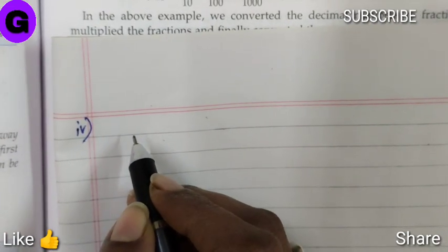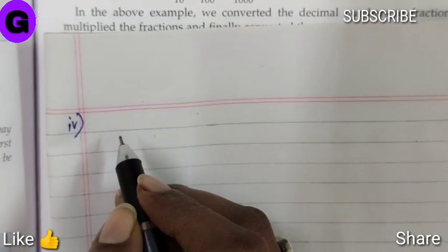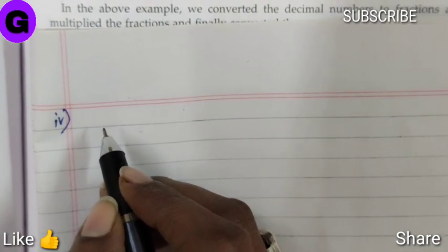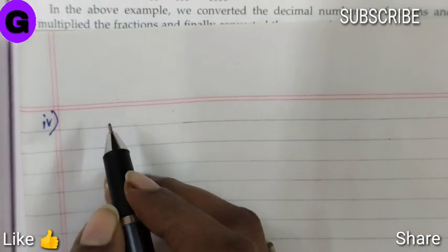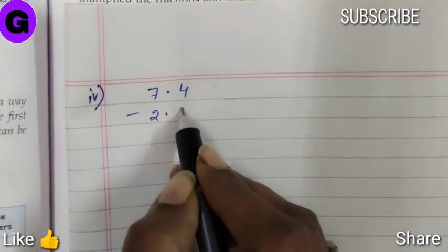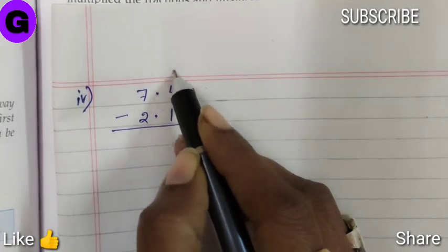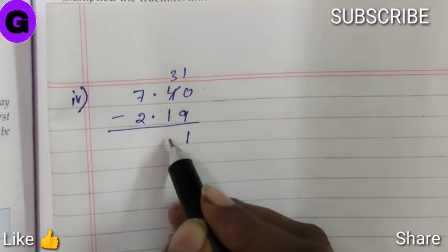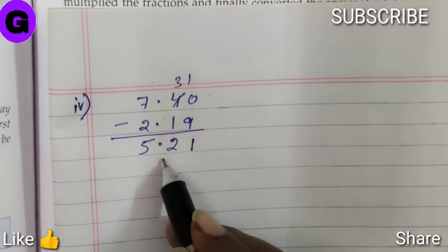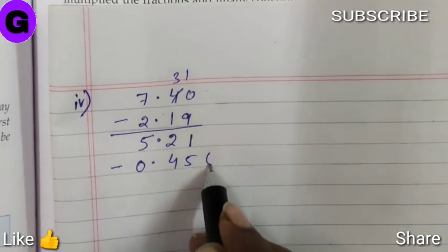Number four, we have to subtract 7.4 minus 2.19 minus 0.456 minus 3.5. So addition has to be done separately, step by step. 7.4 minus 2.19 to 0 here, 10 minus 9, 1. Now from this answer we will subtract 0.456.